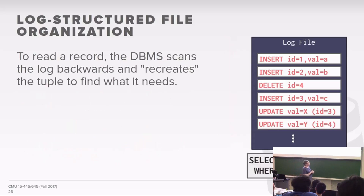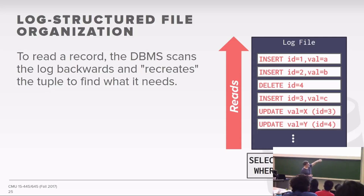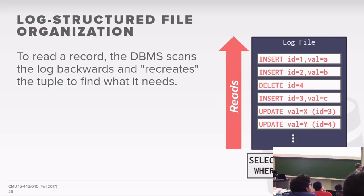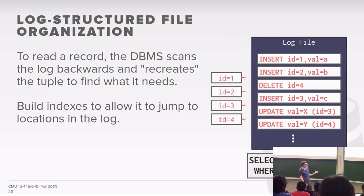Inserting data is really fast in a log-structured system because you're just appending to the log file — by definition it's sequential writes. The obvious challenge is reading: to find a tuple you have to go backwards through the log and find the most recent entry for what you're looking for. You might encounter an update entry first and then keep going to find the original insert. Log-structured databases are really fast for writes but potentially slower for reads. To overcome this, you can build in-memory indexes that point to offsets in the log so you can jump directly to a particular tuple.